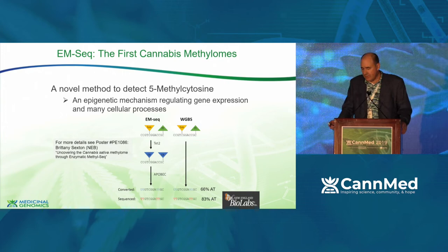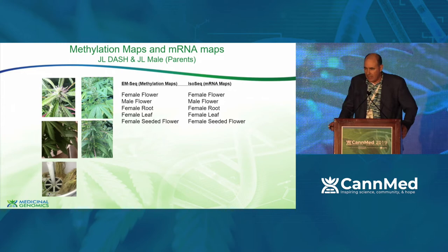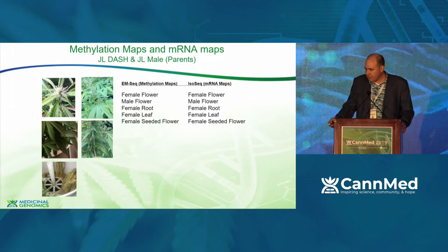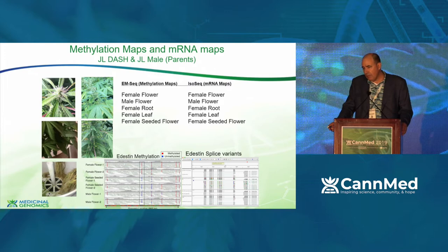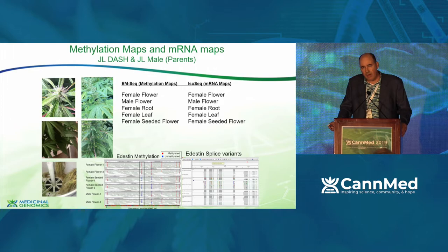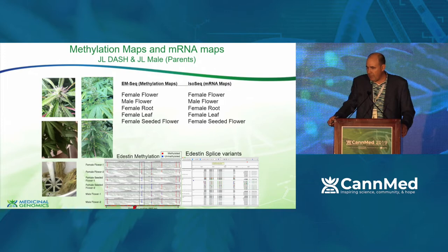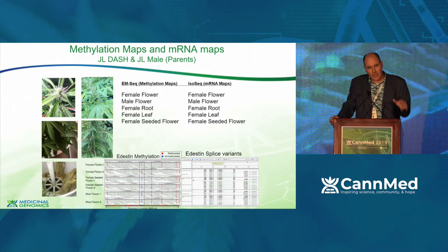New England BioLabs developed a methylation kit with less bias, which we deployed on five different tissues: female flowers, female seeded flowers, male flowers, leaves, and roots. The most interesting thing that pops out when you look at differential methylation is methylation in the adestin gene — the globular protein that makes hemp seed so nutritious. If we want to feed the world, we need to understand how to hyperexpress this protein. You can see it's differentially methylated in seeded flowers versus female flowers. Once seeded, the plant hypomethylates the adestin gene, removing methylation signals and letting gene expression occur. When they want to shut it down, they methylate it, silencing transcription.